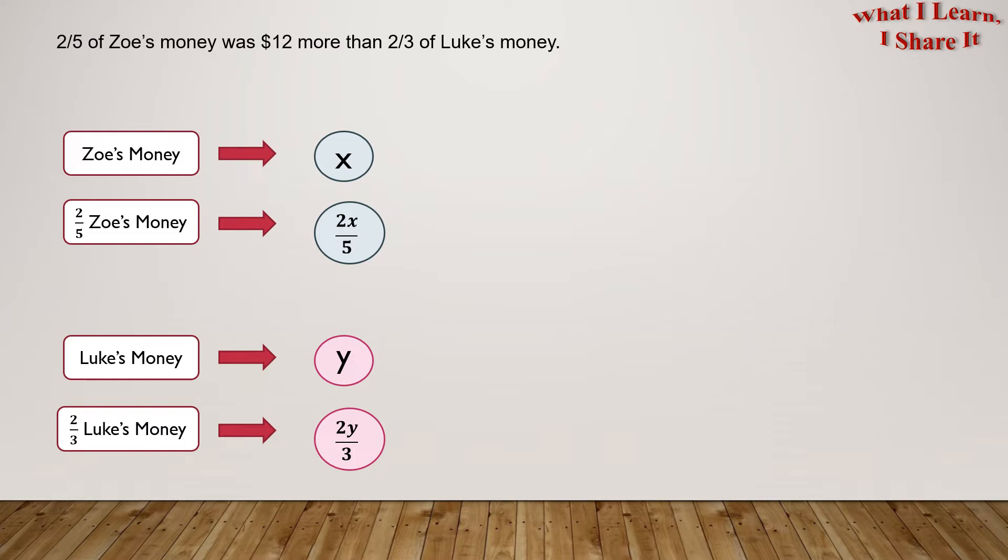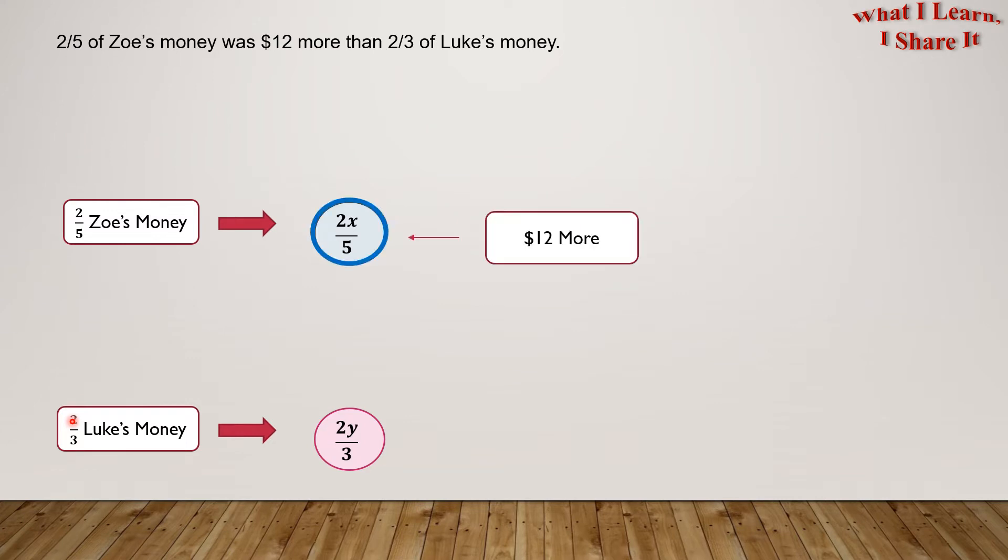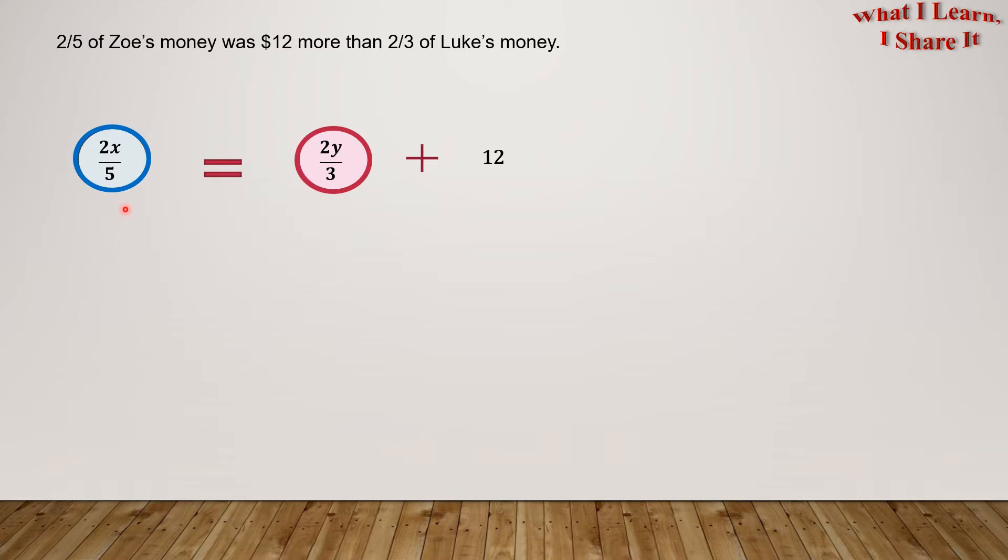Two-fifths of Zoe's money is $12 more than two-thirds of Luke's money. Now, we are given that this is $12 more than this. The other way to understand this is if Luke gets 12 more dollars, then his money will become equal to Zoe's. So, we get 2X/5 equals 2Y/3 plus 12. Let's remember this as a conclusion of this statement.